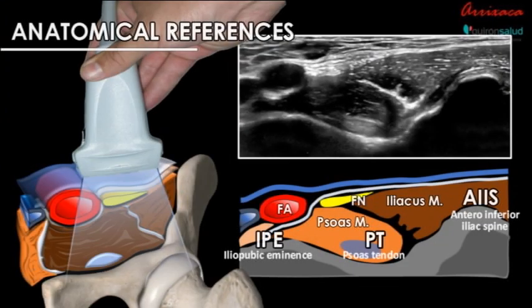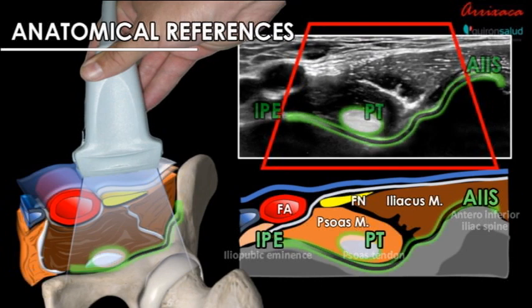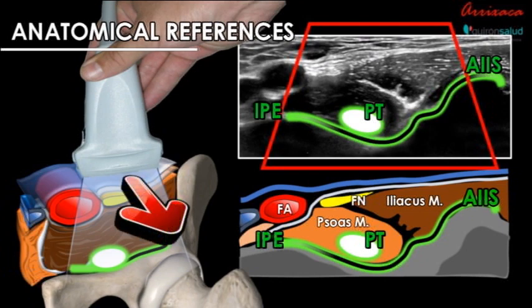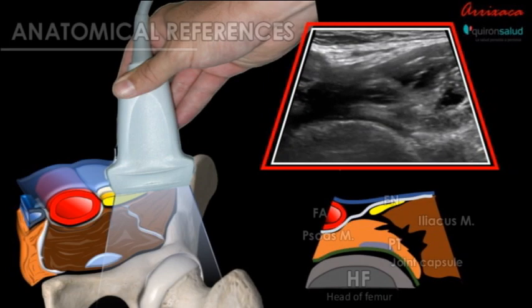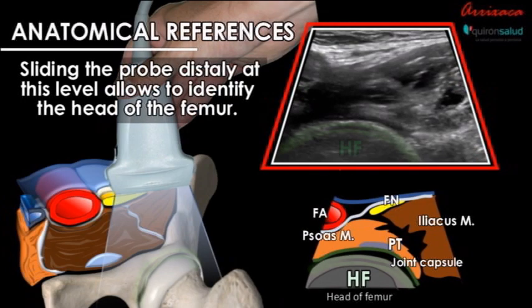Our anatomical references for the PENG block are the iliopubic eminence, the anterior superior iliac spine, and the psoas tendon, which lies between the described bony references. By sliding the probe distally or with a gentle tilt, we are able to identify the head of the femur and the joint capsule of the hip.